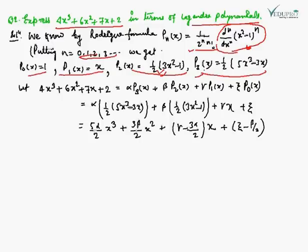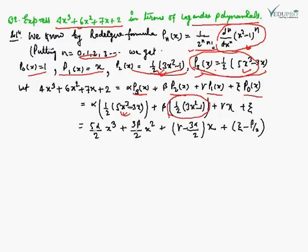Since we have a cubic polynomial, we write: 4x³ + 6x² + 7x + 2 = α·P₃(x) + β·P₂(x) + γ·P₁(x) + ζ·P₀(x). Substituting the known values, this becomes: α·(1/2)(5x³ − 3x) + β·(1/2)(3x² − 1) + γ·x + ζ·1.